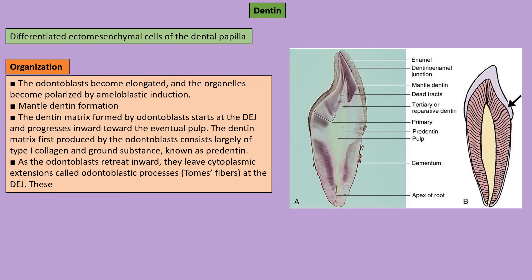Circumpulpal dentine is deposited in the form of globules that calcify to form a complete calcified mass. Sometimes these globules do not fuse, creating a hypomineralized zone called interglobular dentine. Intertubular dentine produced between the tubules is also less mineralized, while peritubular dentine is hypermineralized. When peritubular dentine occludes the dentinal tubule, it is called sclerotic dentine, which has a longer etching time than normal dentine because it is hypermineralized.